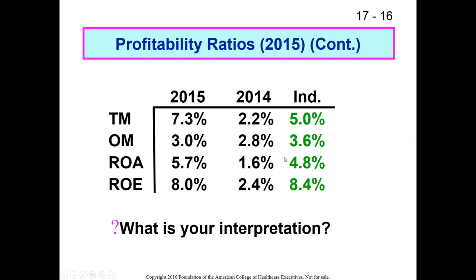Looking at operating margin, they've increased slightly from 2.8 to 3.0 — a thumbs up for the trend. But the industry average is 3.6%, so in both 2014 and 2015 operating margin was below the industry average. This prompts the question: their core operating business is not performing as well as the industry average, which is concerning. But their total margin is up, which means they have some non-operating gains feeding in to make total margin look better.